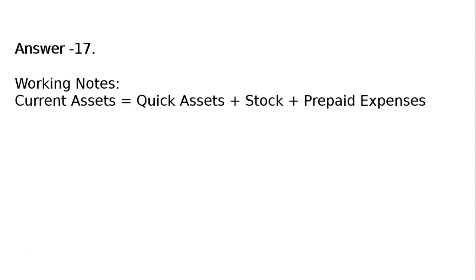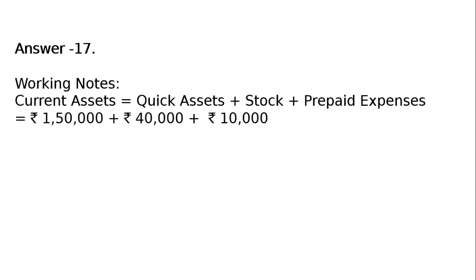In the working notes of answer 17, current assets is equal to quick assets plus stock plus prepaid expenses. That is Rs. 1,50,000 plus Rs. 40,000 plus Rs. 10,000, which is equal to Rs. 2,00,000.